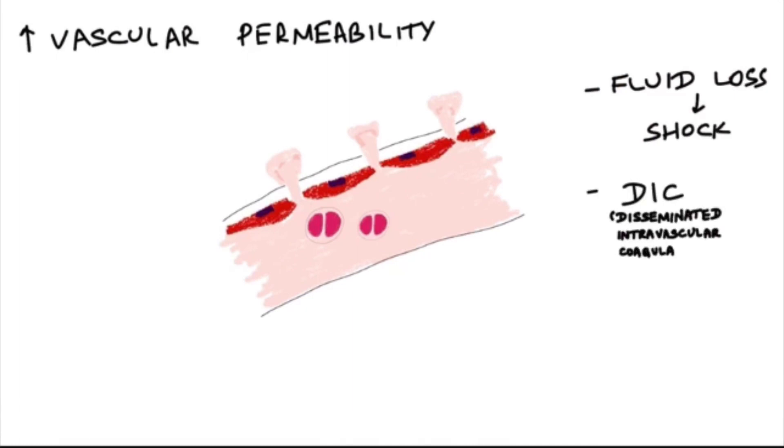There can be a very serious complication called disseminated intravascular coagulation, also called consumption coagulopathy, where there will be multiple thrombosis throughout the body. At the same time, there will be multiple bleeding and multi-organ failure. This disseminated intravascular coagulation is a serious complication.